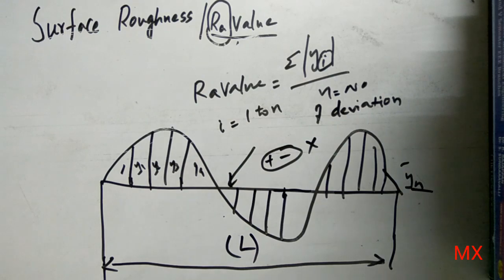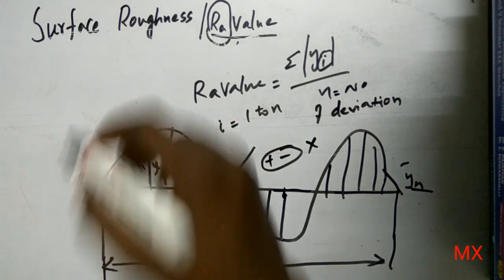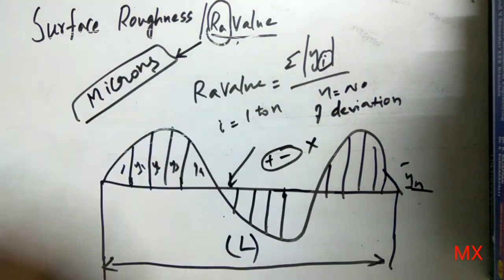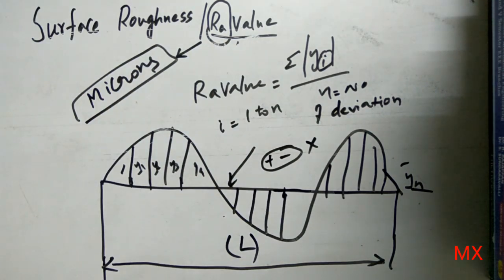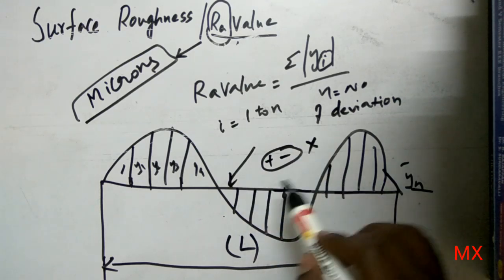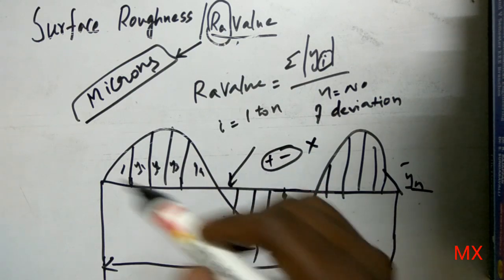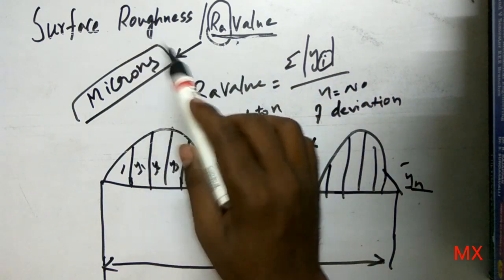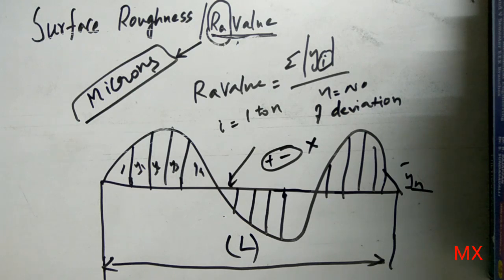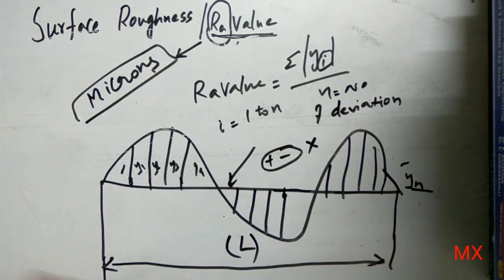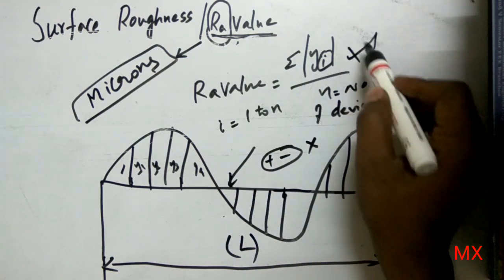This Ra value should be expressed in terms of microns. So Ra value is defined as the arithmetic mean of Y1 to Yn from the mean line, without considering the algebraic signs, and it is measured in microns. This is the quantitative measurement of surface roughness, and this is how we associate the Ra value considering a surface and its parameters.